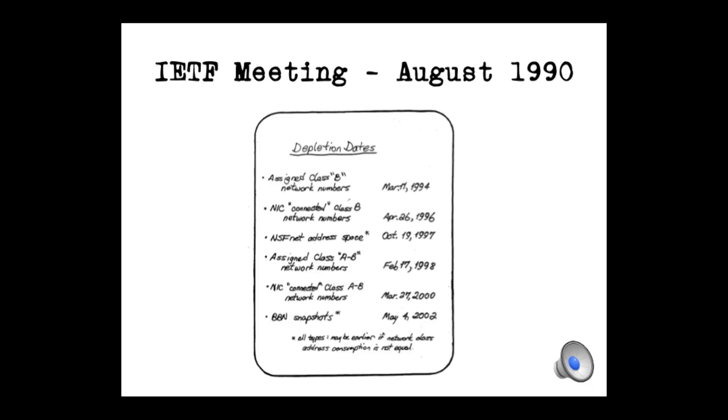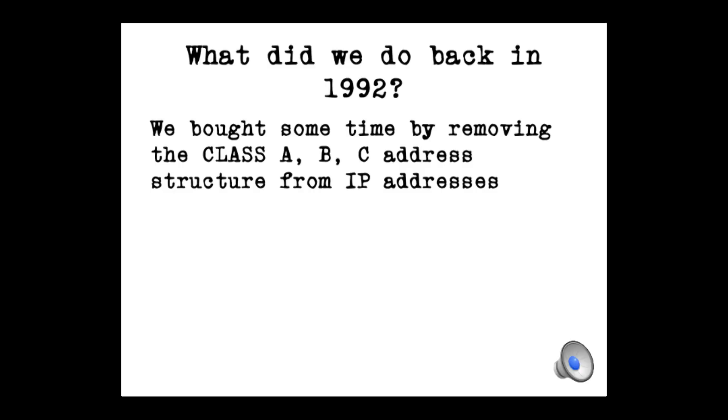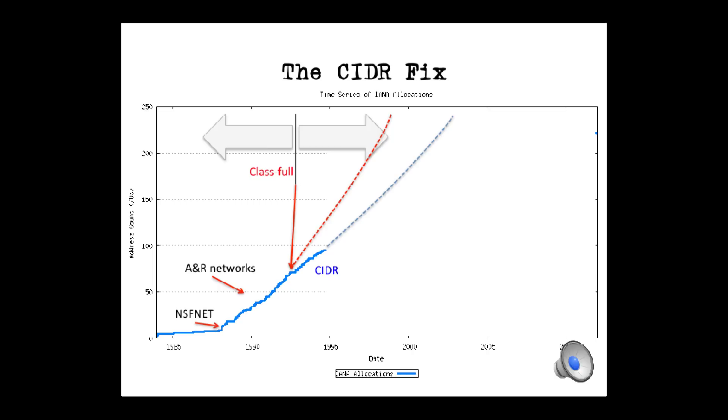So, what did we do with this terrible news? Well, at the time, addresses were structured into fixed host and networking parts. Class A, 8 bits of network, 24 bits of host, B, C, etc. And one of the quick band aids was to just remove that fixed boundary and allow the network part and the host part to be variable. Classless inter-domain routing appeared and it hit the internet in March 1993, as I recall. And all of a sudden, the trajectory of address usage changed dramatically.